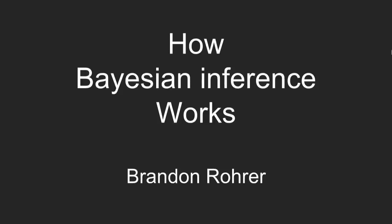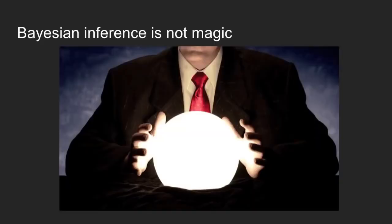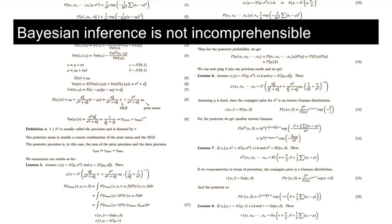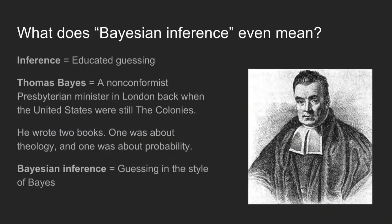Bayesian inference is a way to make guesses about what your data mean based on sometimes very little data. The way it works is tricky, but it's not magic. It's definitely something that you can wrap your head around. My goal is that by the time we're done talking, you'll have a pretty crisp picture of how it works. Bayesian inference is just guessing in the style of Thomas Bayes, who was a non-conformist Presbyterian minister. He wrote a couple of books — one about religion and one about probability.